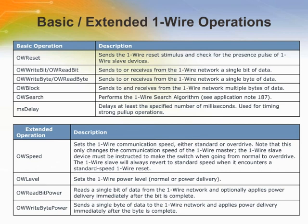This slide shows three basic primitives — OW-reset, OW-write-bit, OW-read-bit — and OW-write-byte, OW-read-byte, along with three other useful functions: OW-block, OW-search, and MS-delay. Together these make up a core set of basic One Wire operations.